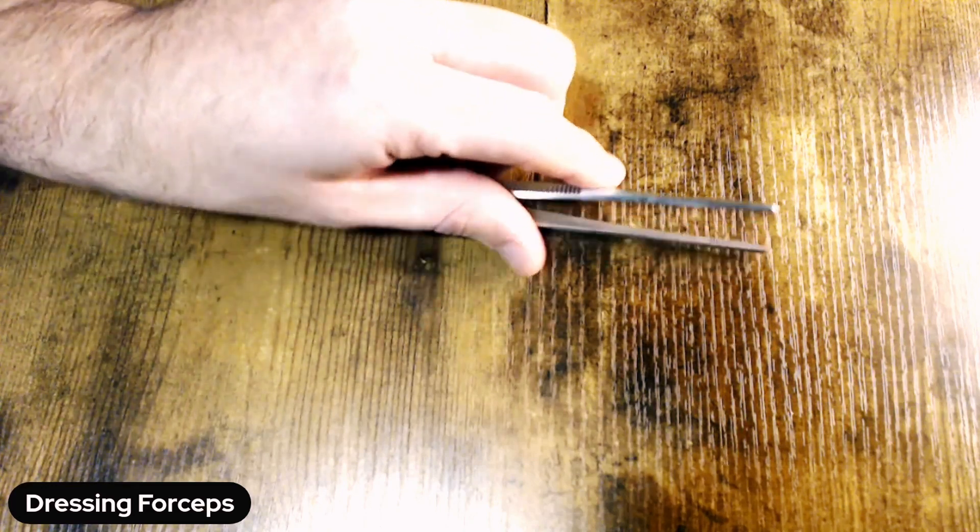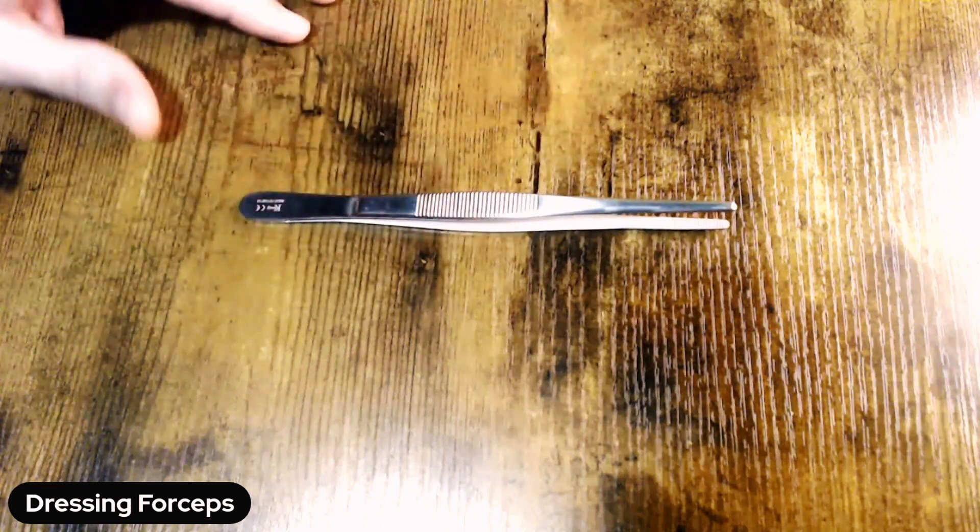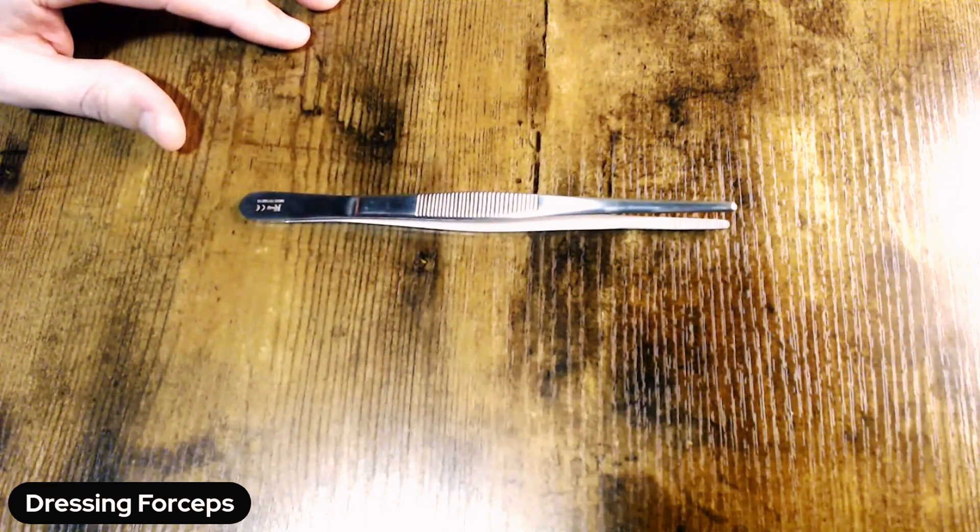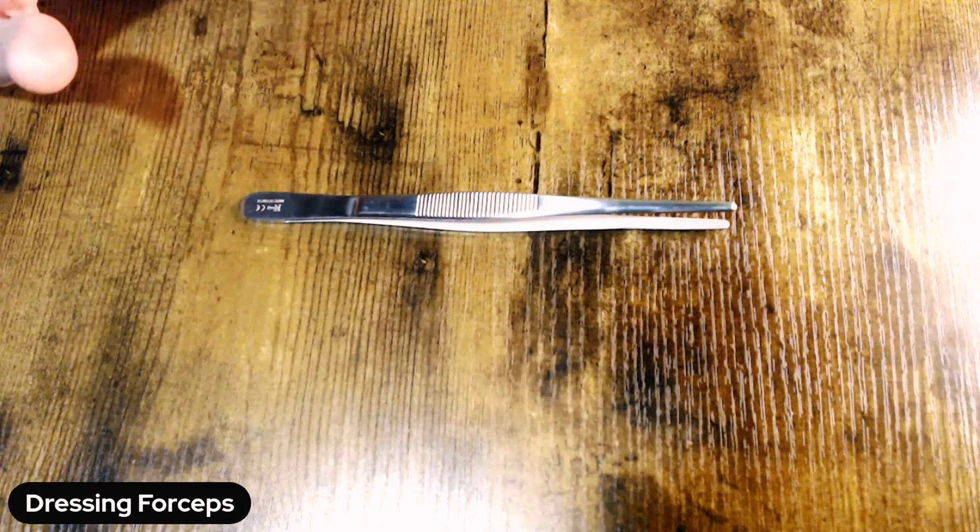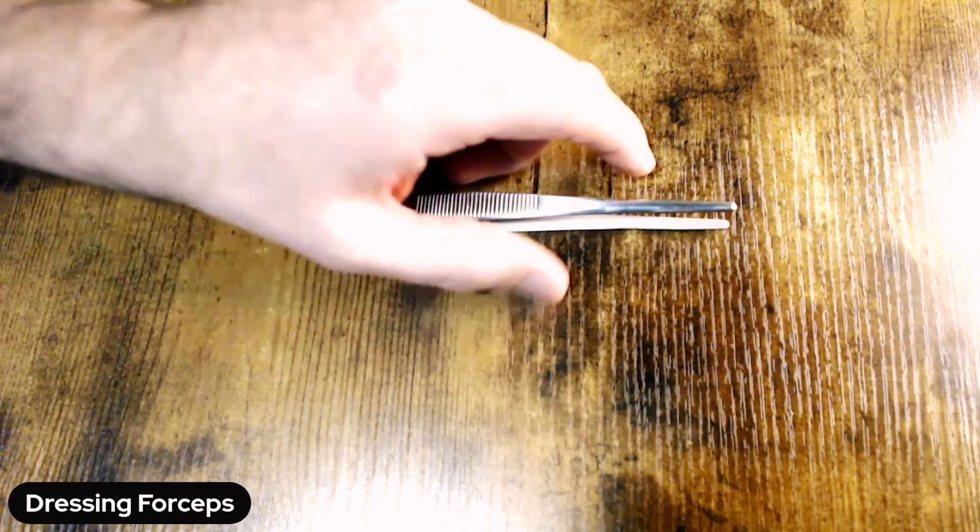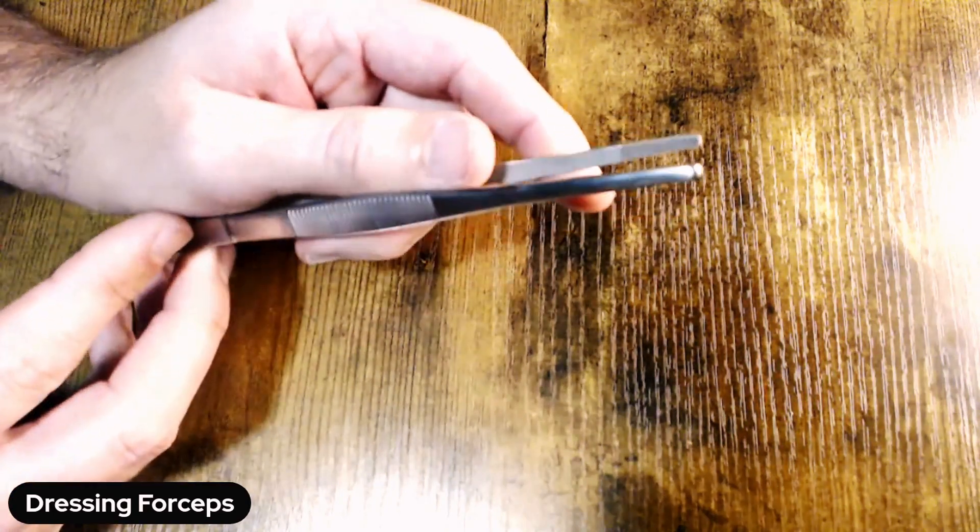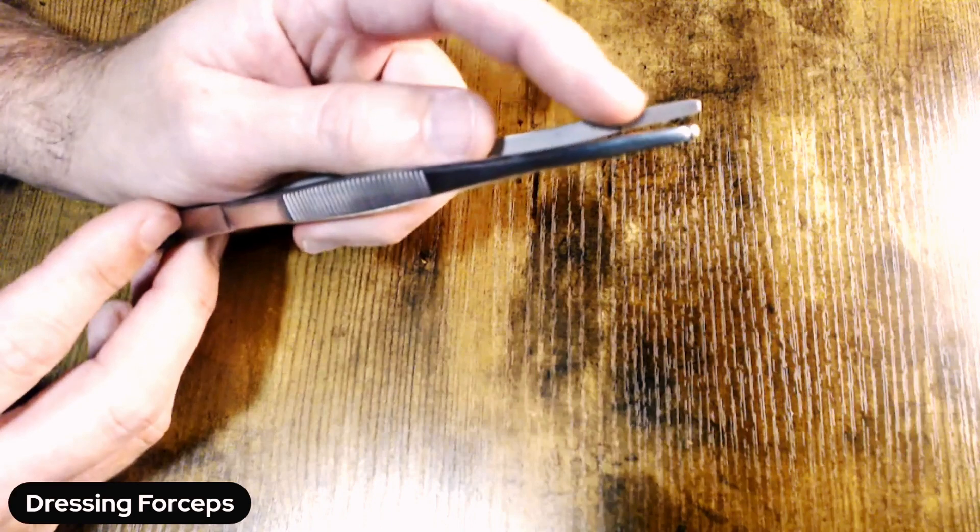If you've been in the industry for any time, you know that these go by a number of names, including a smooth forcep, which is a little confusing for newer technicians because if you look closely, there are serrations on the distal tip of this device.